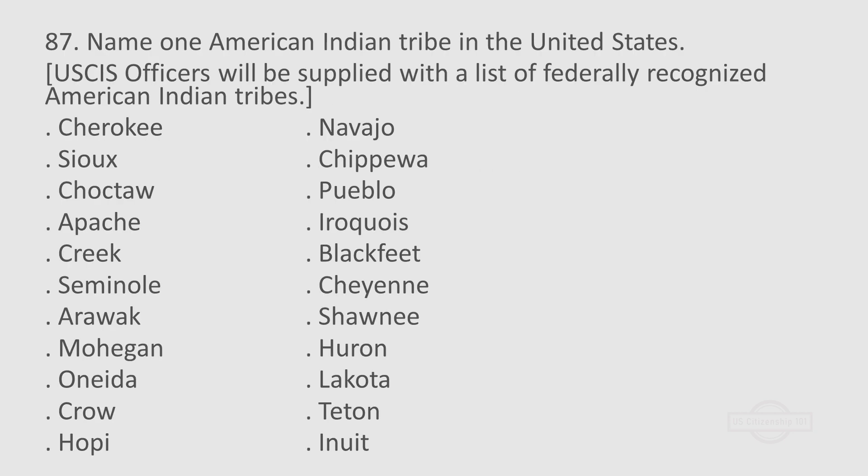Question 87: Name one American Indian tribe in the United States. USCIS officers will be supplied with a list of federally recognized American Indian tribes. Cherokee. Navajo. Sioux. Chippewa. Choctaw. Pueblo. Apache. Iroquois. Creek. Blackfeet. Seminole. Cheyenne. Arawak. Shawnee. Mohegan. Huron. Oneida. Lakota. Crow. Teton. Hopi. Inuit.